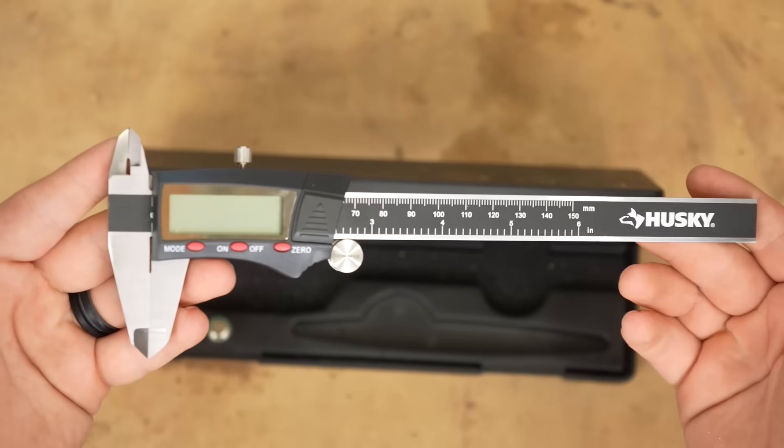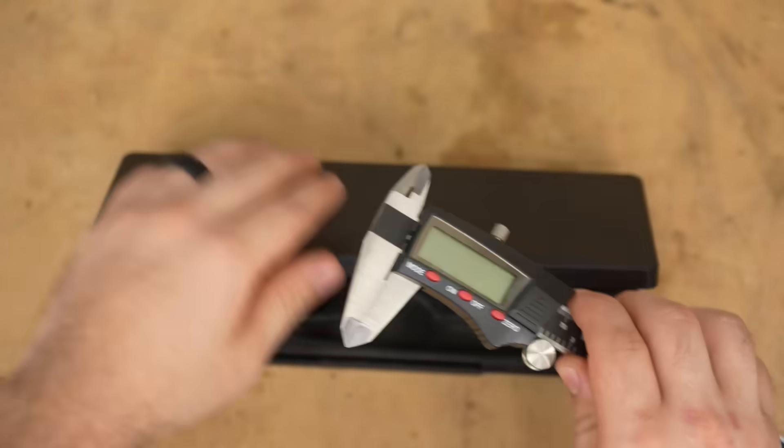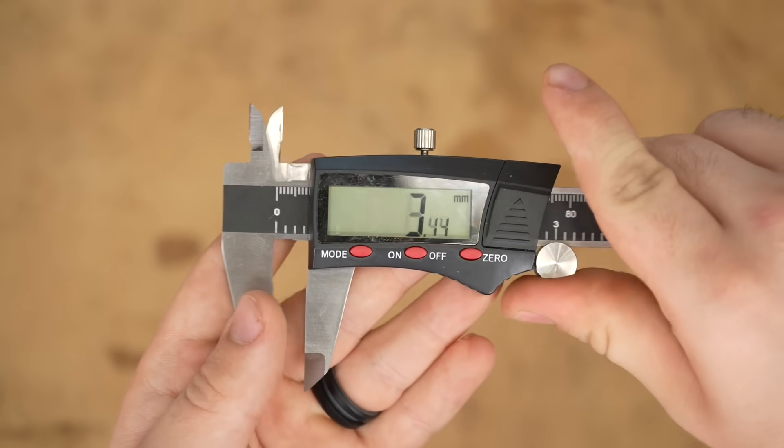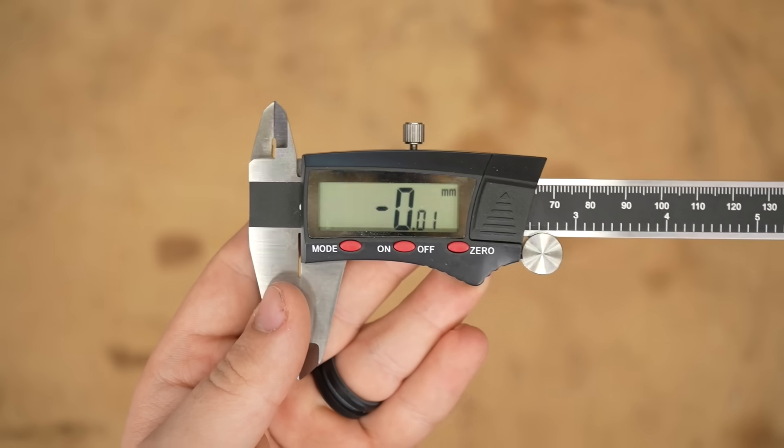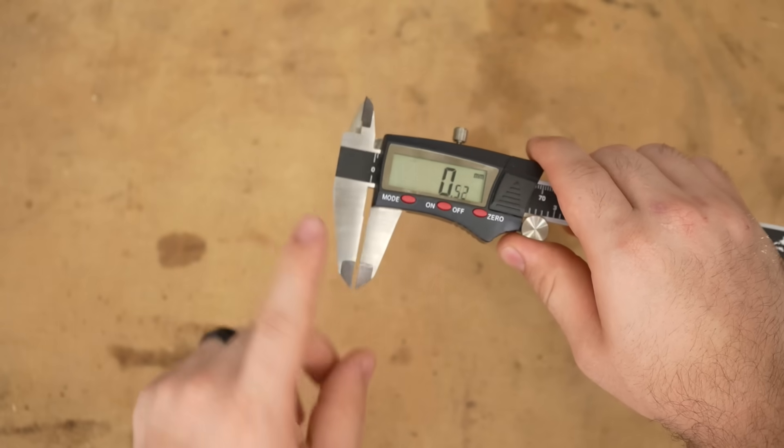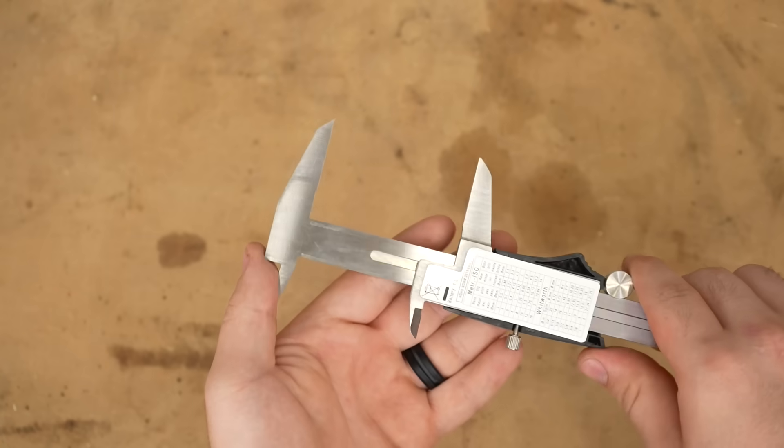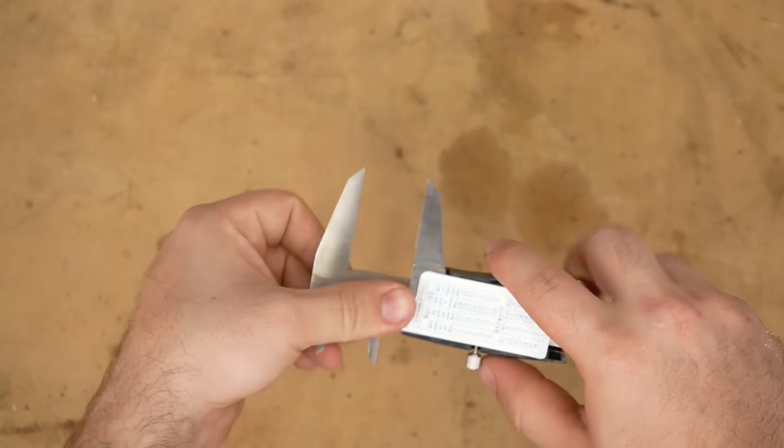Moving on, digital calipers are much easier to use, with a screen that displays the values. And there's not much to say about these, though there is much to say about properly using them. These calipers have four main methods of measuring. They have the outer, inner, depth, and step, also known as rebound measurement.